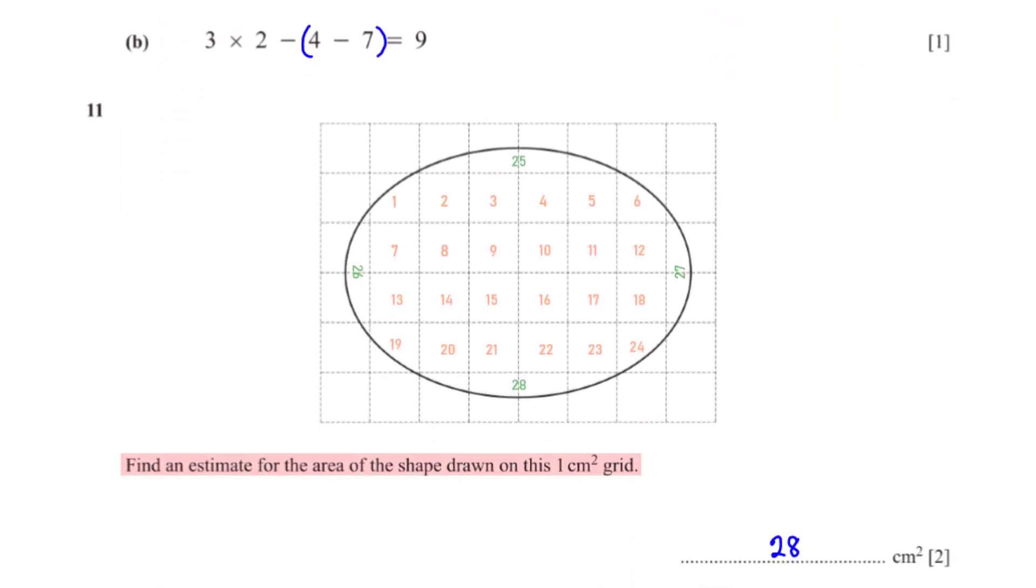Find an estimate for the area of the shape drawn on this 1 centimeter square grid. We can start by counting the number of complete or almost complete squares in the shape, which we get to be 24. We can count the set of small squares at the top, bottom and sides of the shape as 1 centimeter squared. So in total, we have 28 centimeters squared.